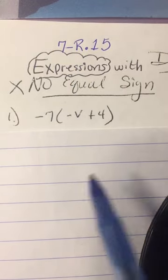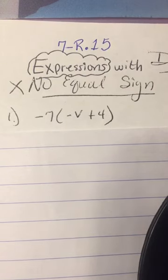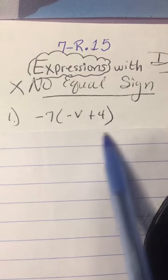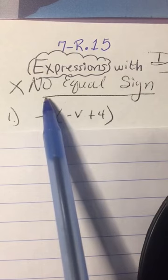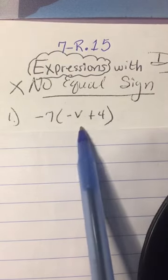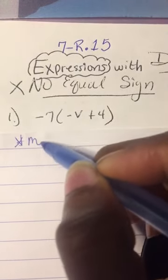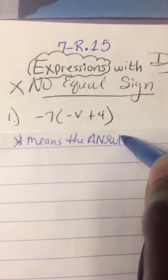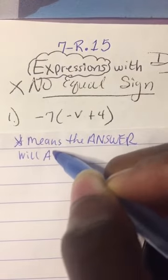Okay, so when you see what looks like an equation, an equation means that there's an equal sign. So this looks like an equation, but it's not. This is an expression because it has no equal sign. That means the answer will also have no equal sign.